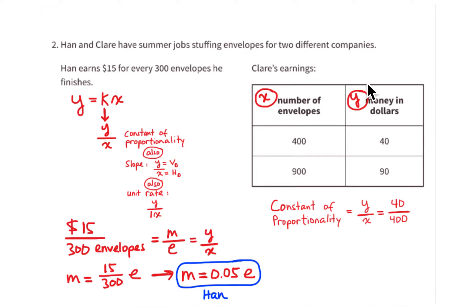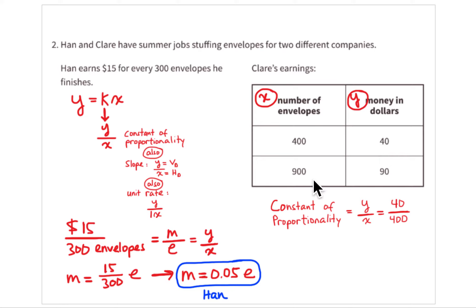Now let's look at the table for Claire to get to her equation. We set up y-values in the right column and x-values in the left column. From the table: stuffing 400 envelopes earns $40, and stuffing 900 envelopes earns $90. That calculation is based on the constant of proportionality.